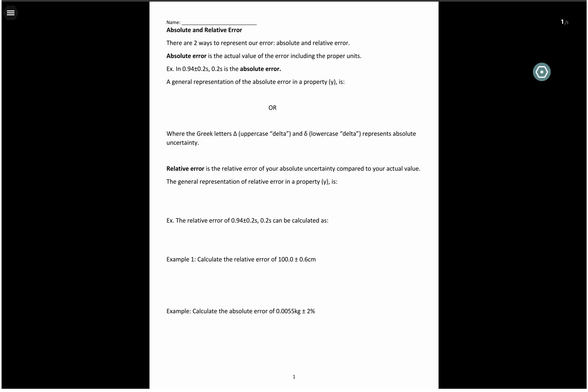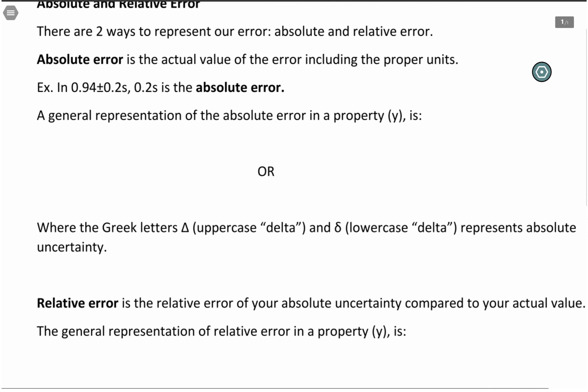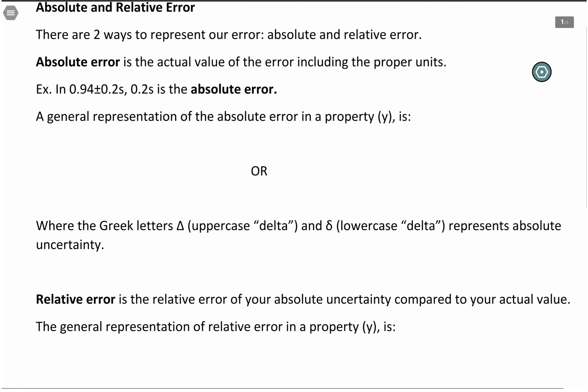Absolute error is the actual value of the error including the proper units. These are the things that you've seen before when we were working with our lab. So taking our first example, in 0.94 ± 0.2, the 0.2 is the absolute error.